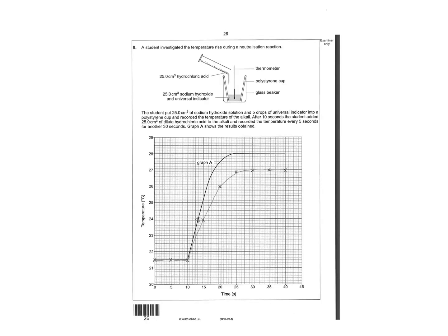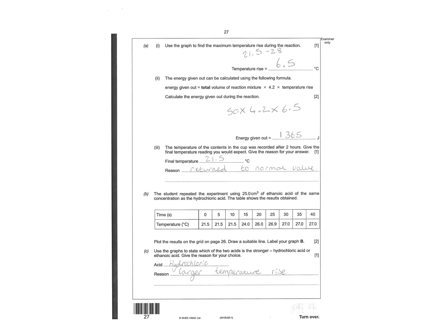Blank page. Nice easy question where you plot points. Then it asks you to find the maximum temperature rise. It starts at 21.5, take away 28 would give you 6.5. Total volume, that's the 25 plus the 25 give you 50, times by 4.2, times the temperature rise would be 6.5. The final reading, it would have 21.5, it will go back to normal values.